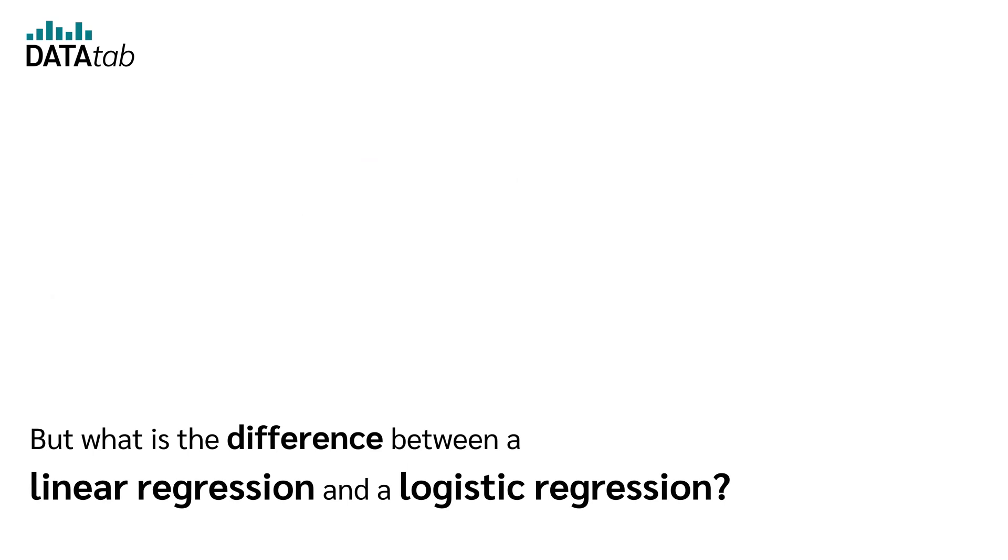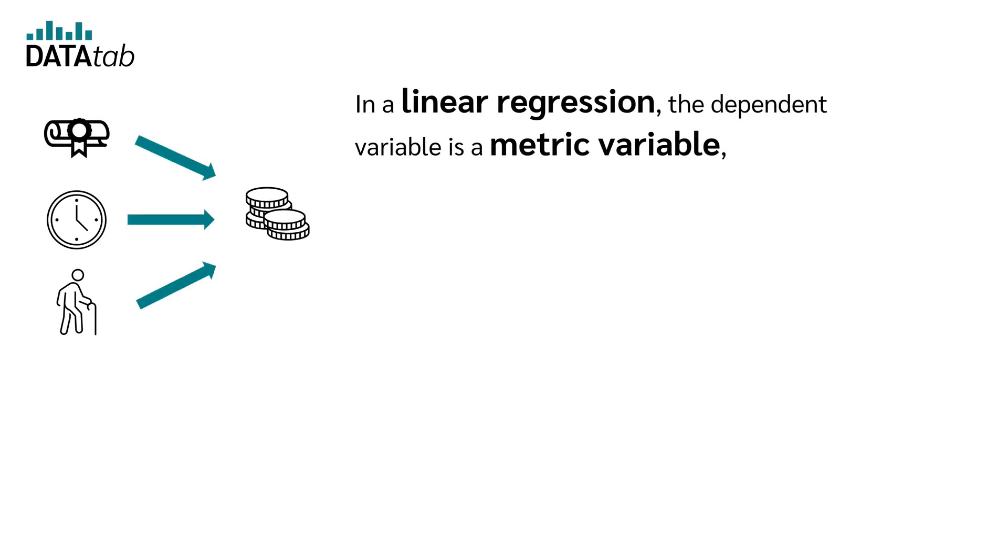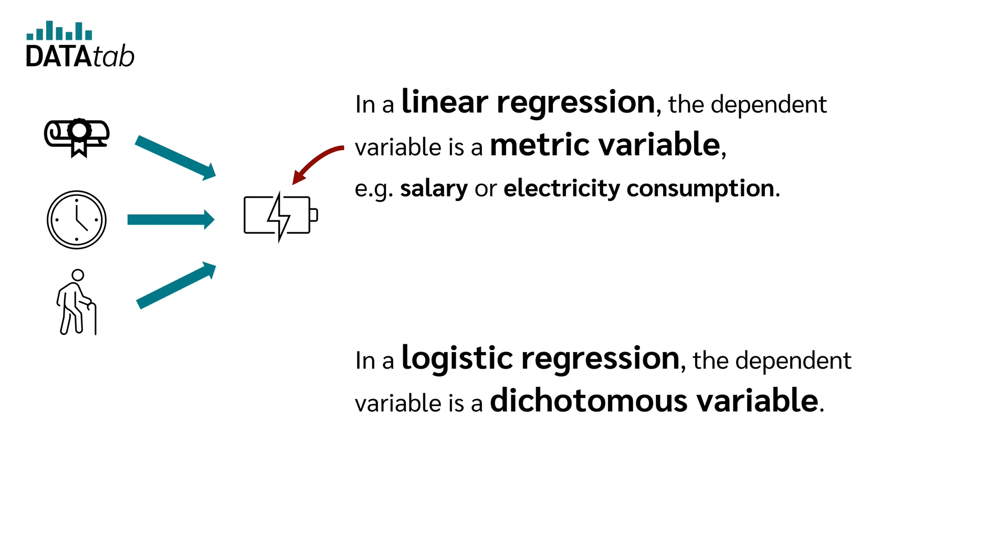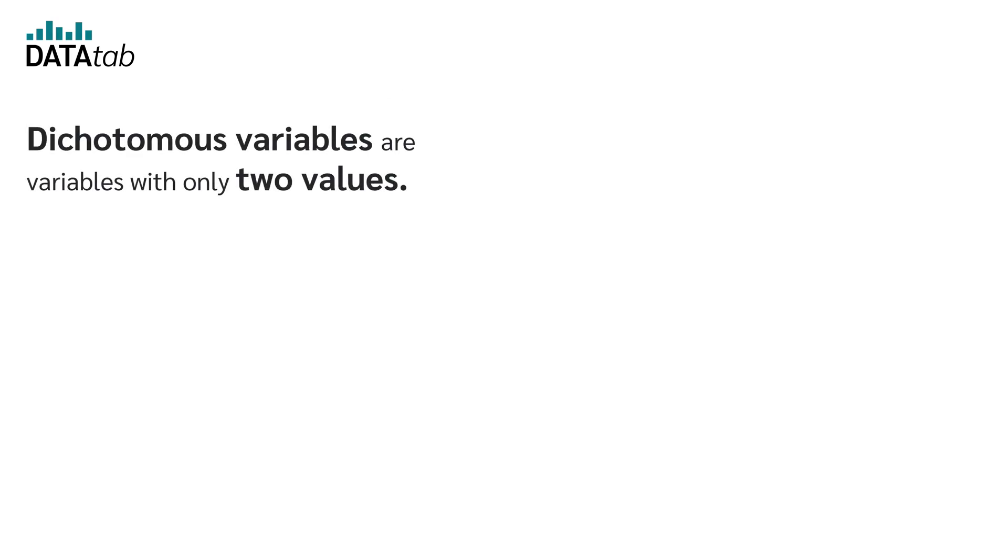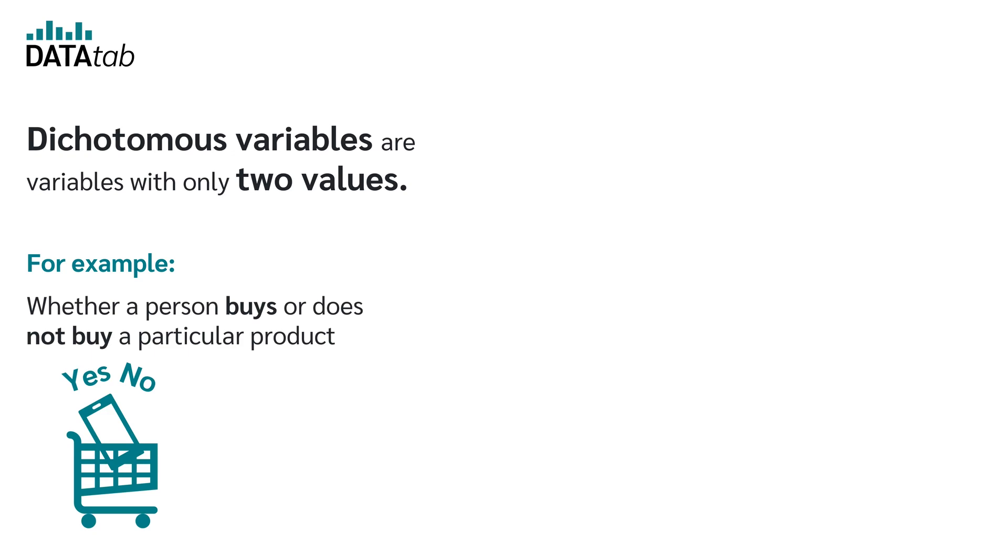But what is the difference between a linear regression and a logistic regression? In a linear regression, the dependent variable is a metric variable, for example, salary or electricity consumption. In a logistic regression, the dependent variable is a dichotomous variable. Dichotomous variables are variables with only two values, for example, whether a person buys or does not buy a particular product or whether a disease is present or not.